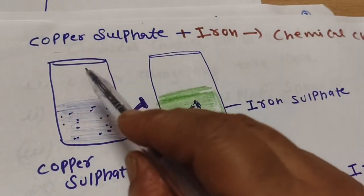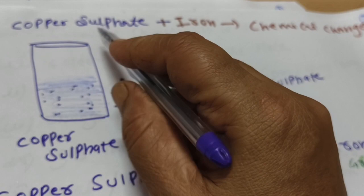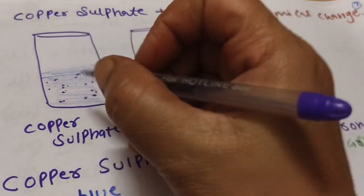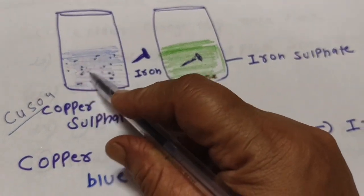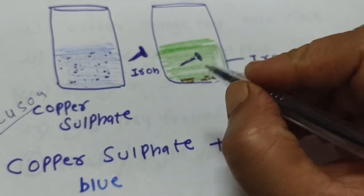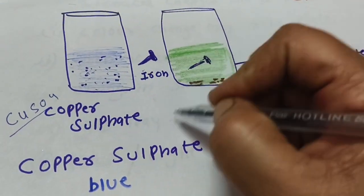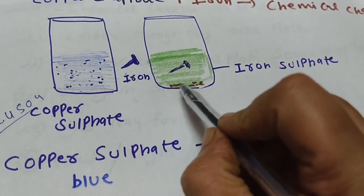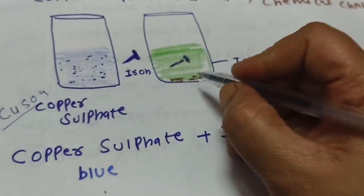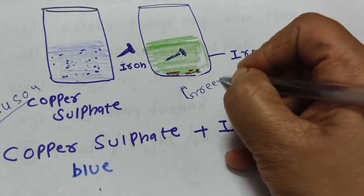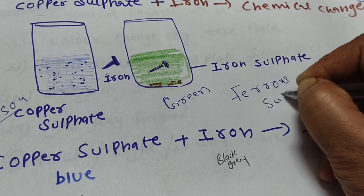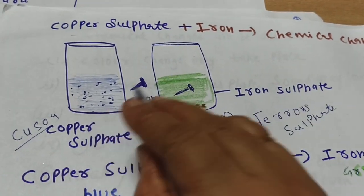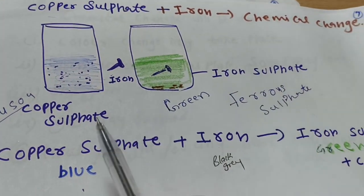Now let's see a simple reaction. Copper sulfate is a very important salt — also called blue vitriol — which you will study more in higher classes. Copper sulfate is blue in color. But when we add iron, like an iron nail, what happens? This reaction starts, and there is a blue to green color change. The iron becomes iron sulfate, also called ferrous sulfate. This is a chemical change: color changes and a new product is formed.